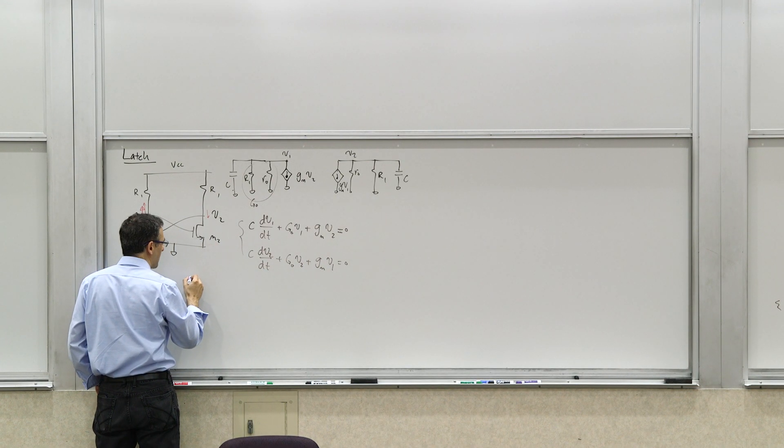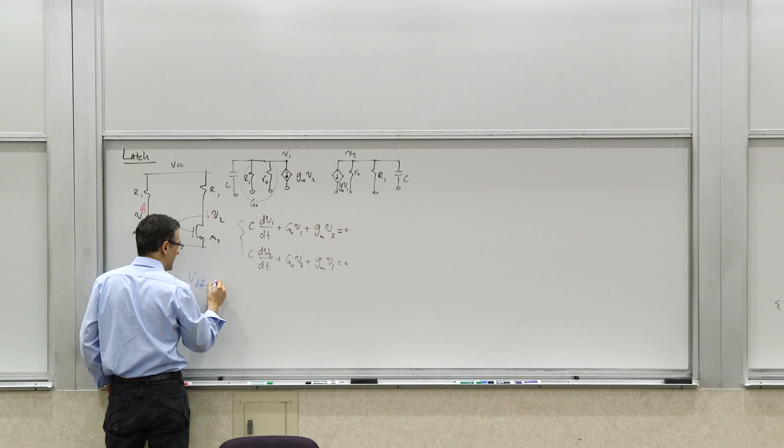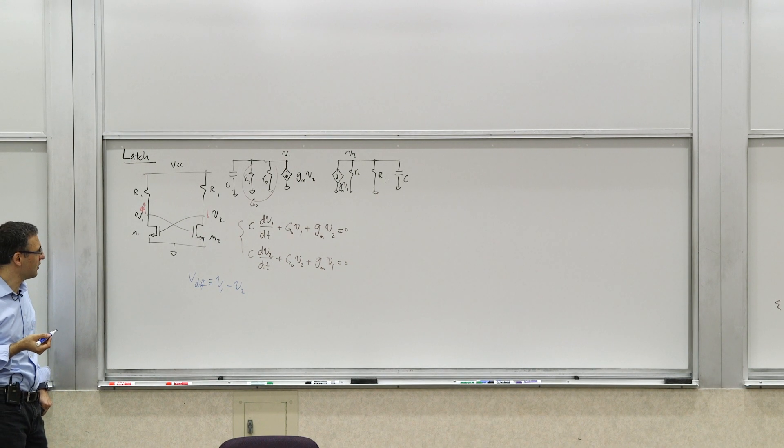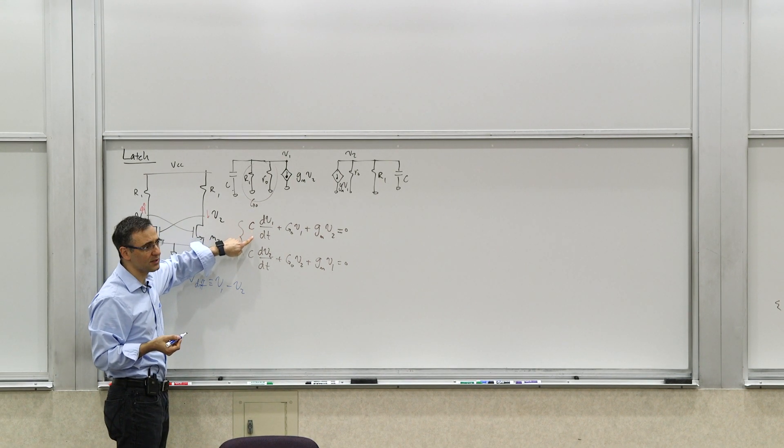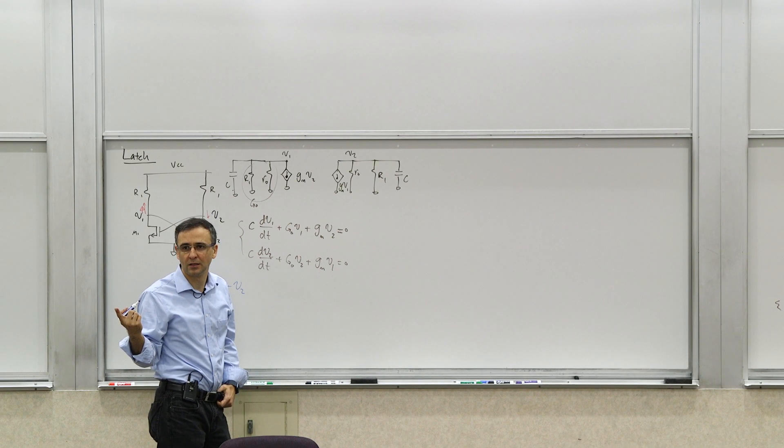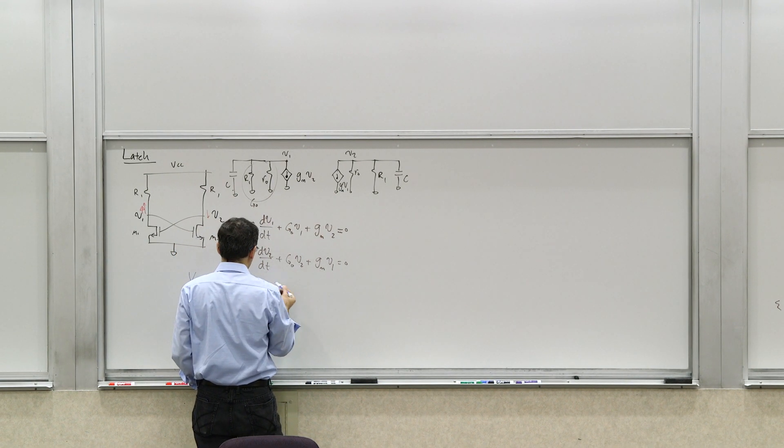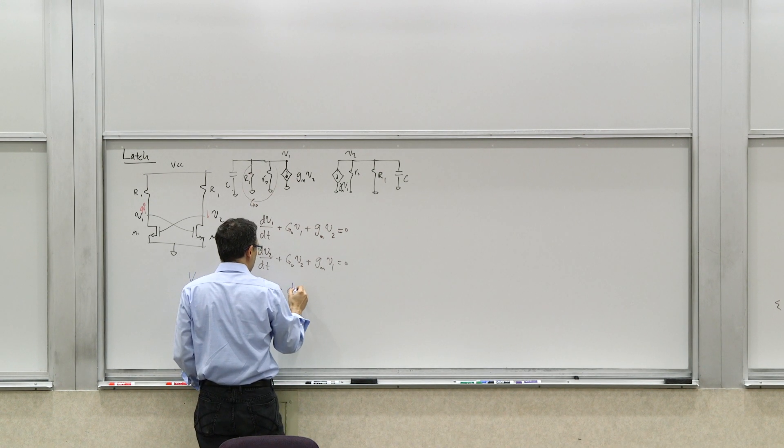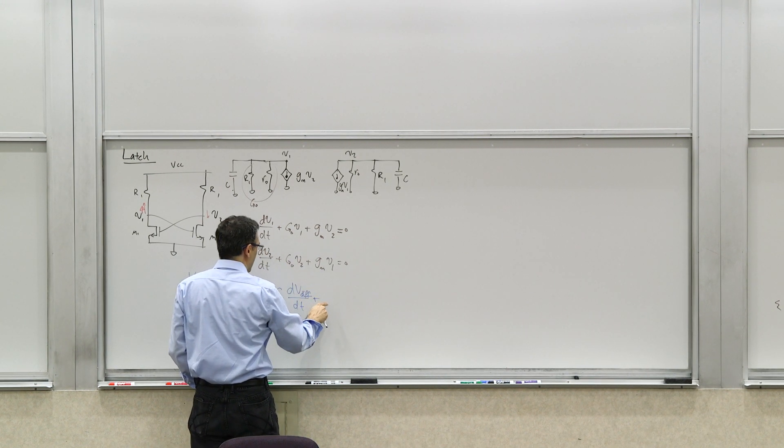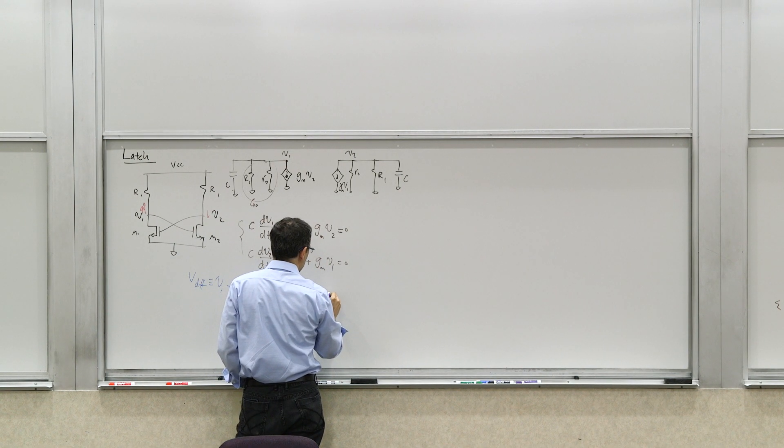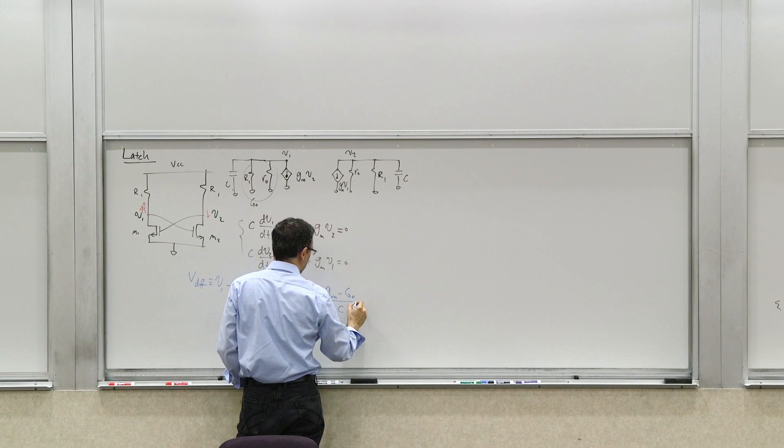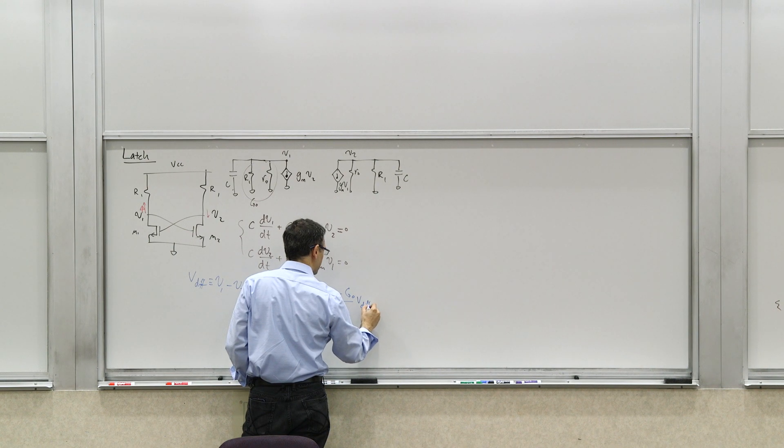Now, if we define a voltage V diff is V1 minus V2, if we define the difference voltage, then we can see that you can actually subtract the second equation from the first equation, and what will end up is that it's a single equation that's in terms of the differential voltage. By subtracting the second equation from the first equation, you will get C dV diff over dt, plus, then you have these terms. So I write it this way. I write as GM minus G0 over C, I'll divide both sides by C, V diff equals zero.